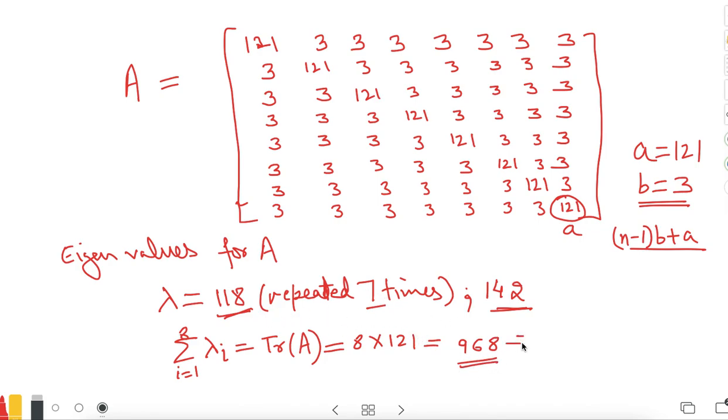And you will find that 7 times 118 plus 142, the sum of eigenvalues, is also the same number.